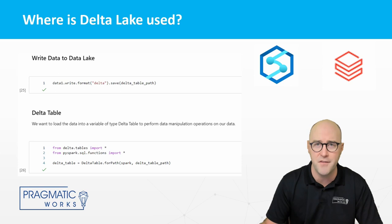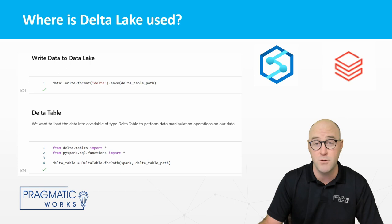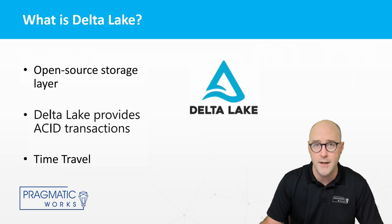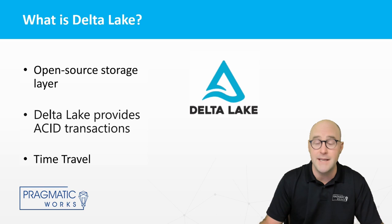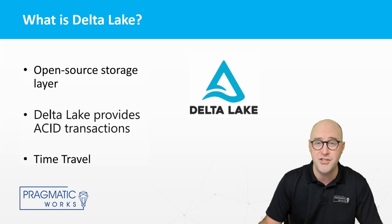The data lakehouse keeps your data in a massively scalable cloud storage object using open-source data standards, allowing you to use your data however and wherever you want. To summarize: Delta Lake is an open-source data storage layer that provides reliability, scalability, and performance to a data lake. It provides ACID transactions, schema enforcement, and time travel capabilities on top of Apache Spark or Databricks, and is designed to handle large-scale data workloads while enabling users to easily manage data versioning, auditing, and governance.